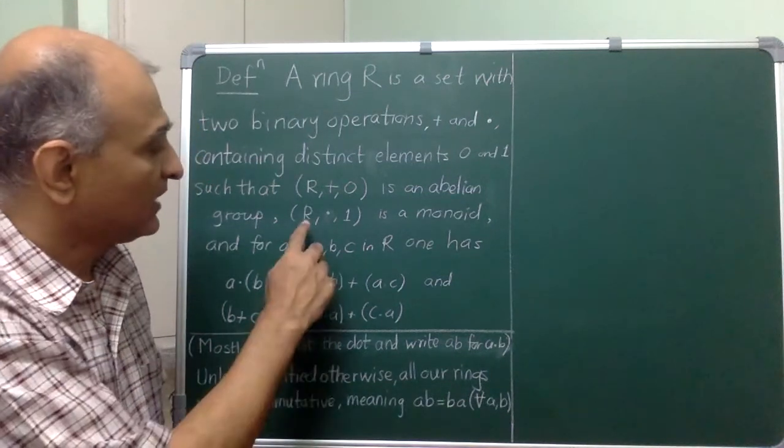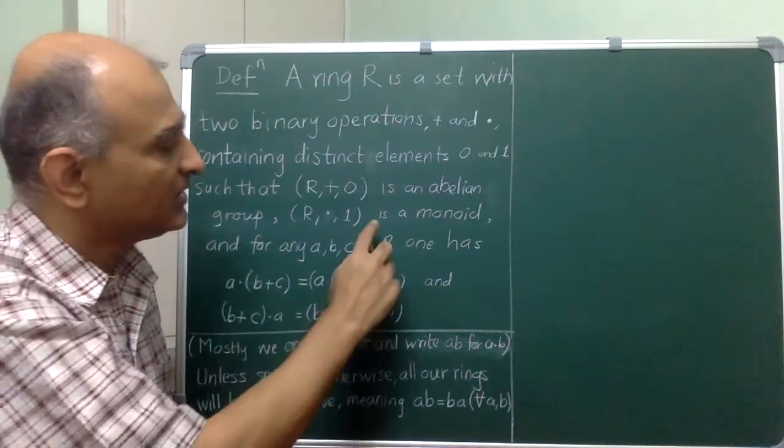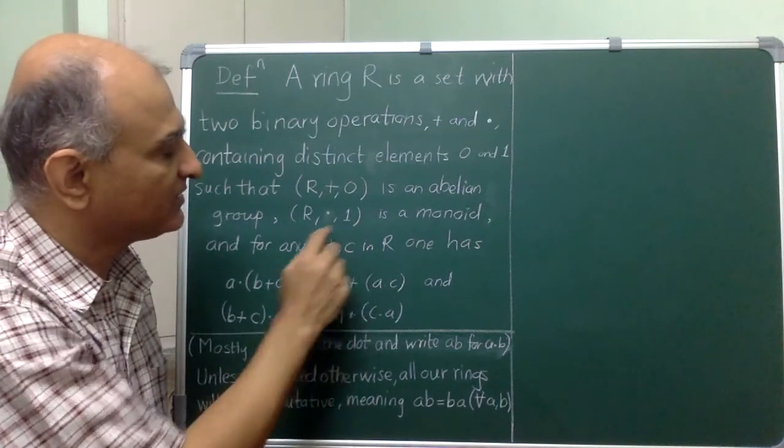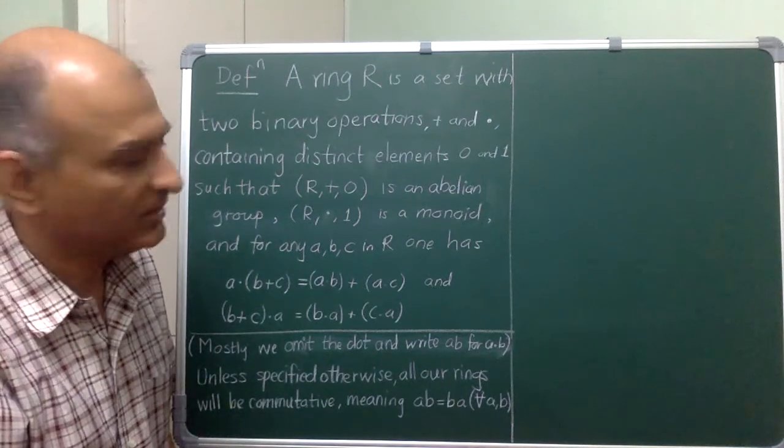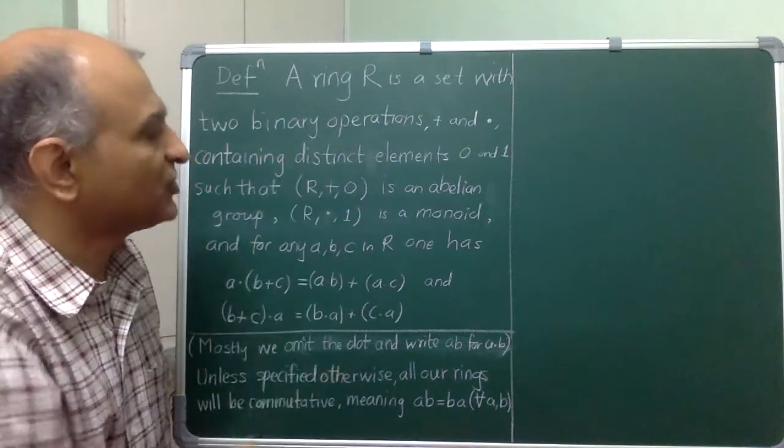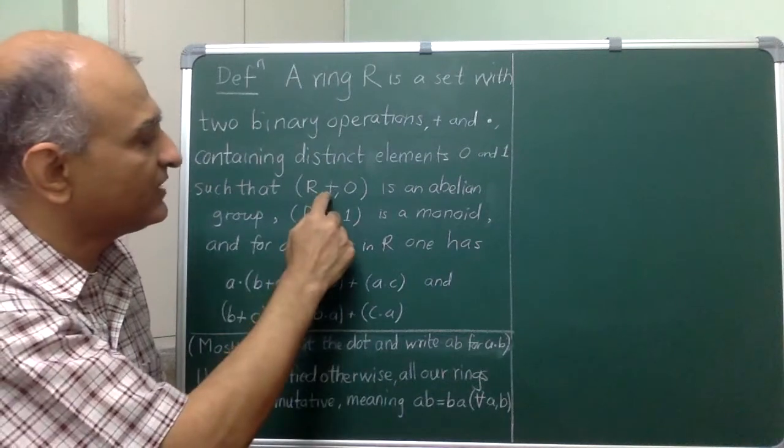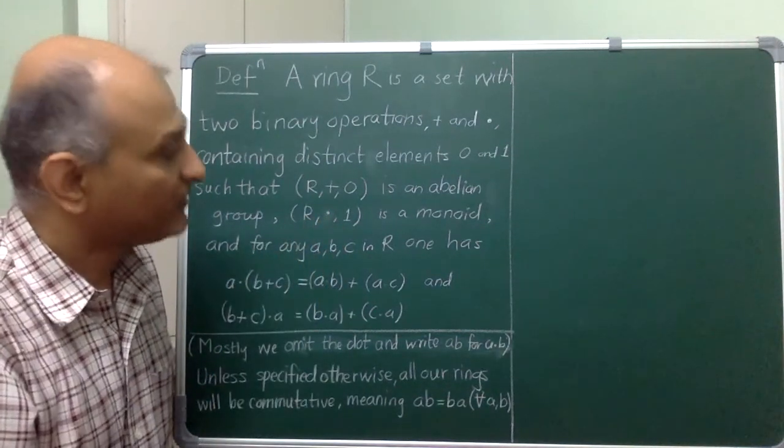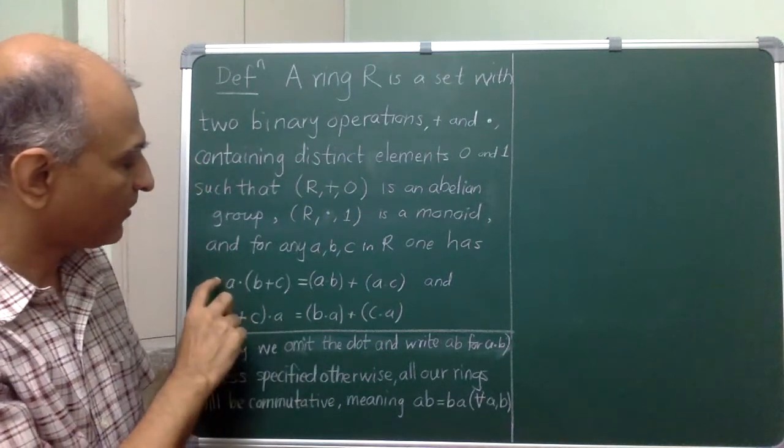Then moving on, R under the operation dot, which we will always call multiplication, is a monoid. That means that there is a multiplicative identity 1 and the multiplication is associative and that is it. We do not insist that the multiplication be commutative for the general definition of a ring.